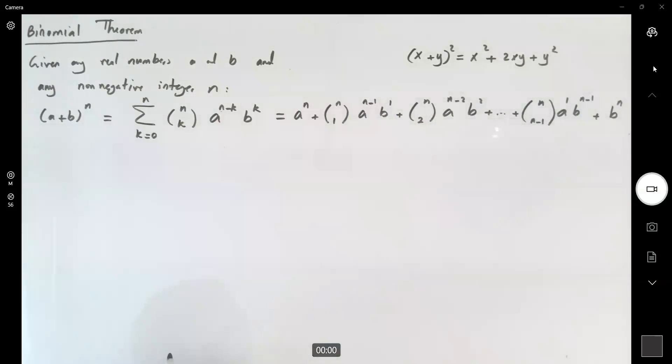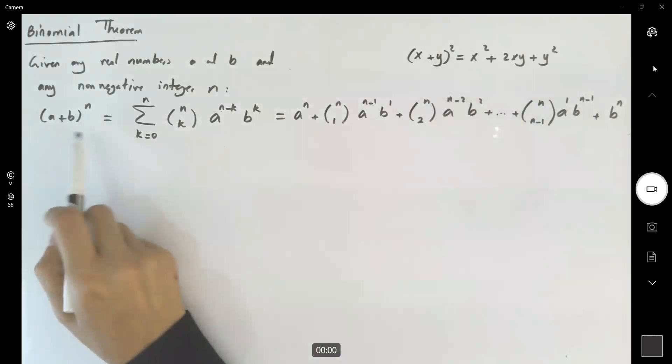So this is called the binomial theorem. Again, you saw binomial theorem before, you used it in algebra a lot, but this is the official definition. That if you have the summation or subtraction between two numbers and raise it to a non-negative exponent, you can write it this way.